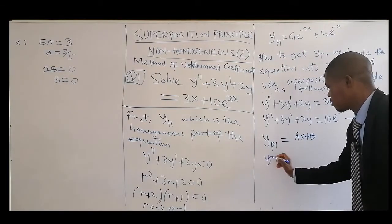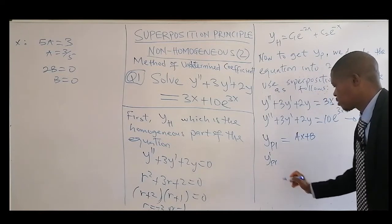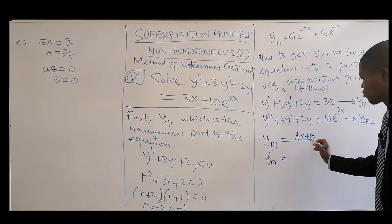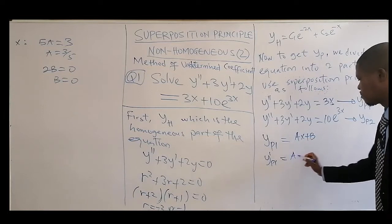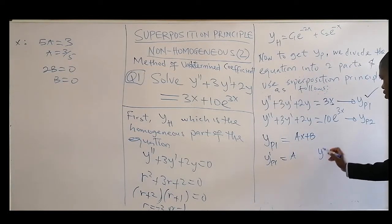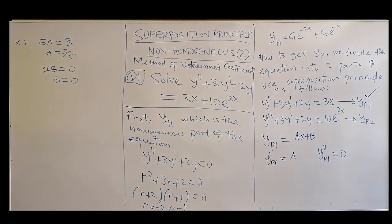Then we can get the first differential of your particular solution, which will be equal to, if you differentiate this, you have A. Second differential YP1, you have 0.